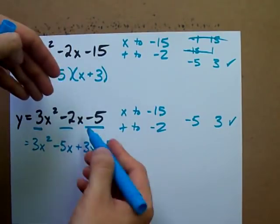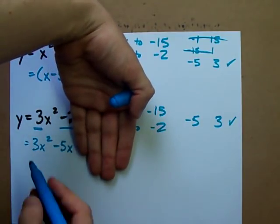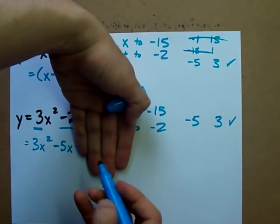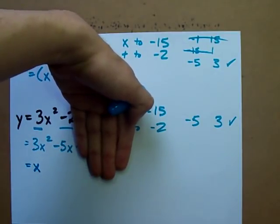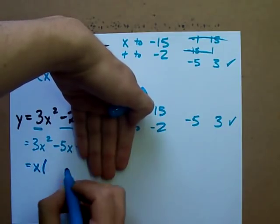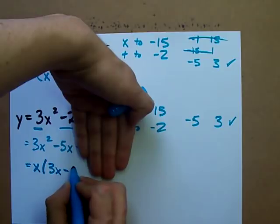And then, once you get there, factor the first two terms. What's common to both of these? Well, not much except for they both have an x in it. And when you pull x out of that, you're left with 3x minus 5.